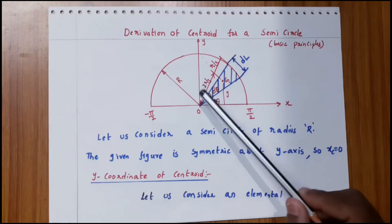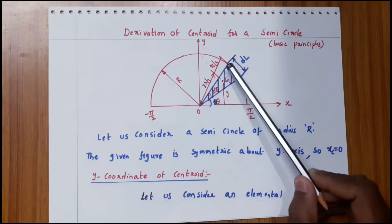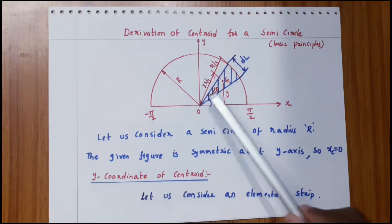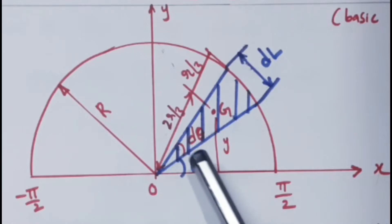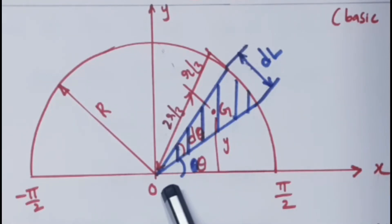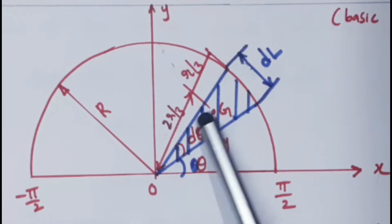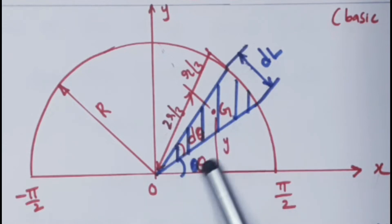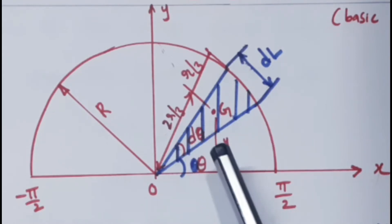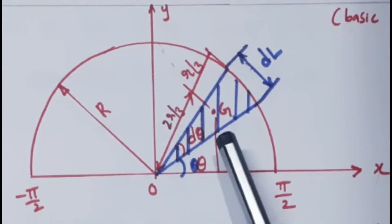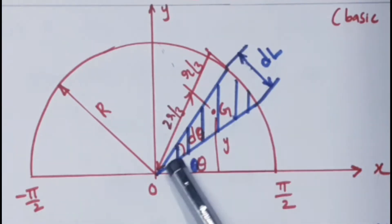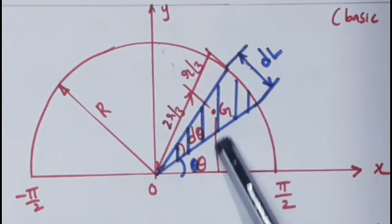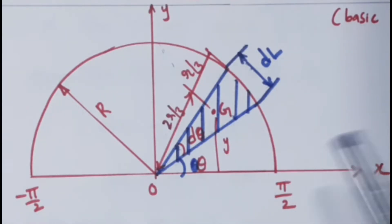Consider an elemental strip in the form of a triangle. The angle between the x-axis and the strip is theta, the strip angle is dθ, the strip length is dl, and the radius is R.